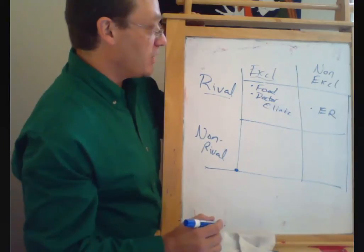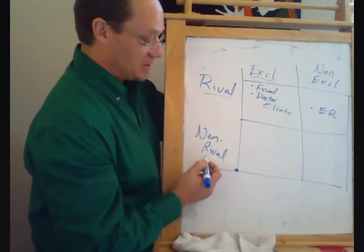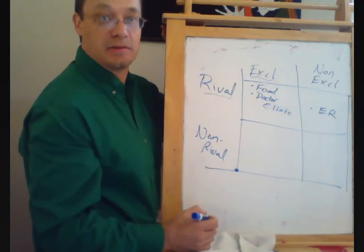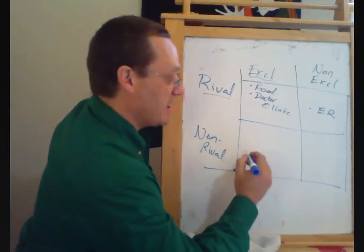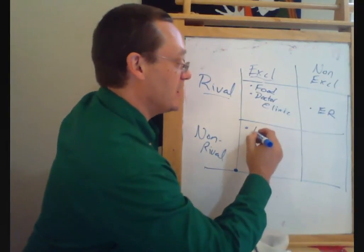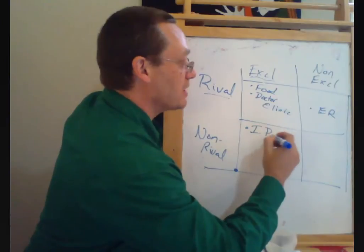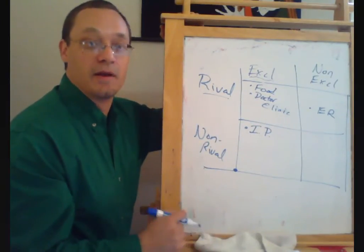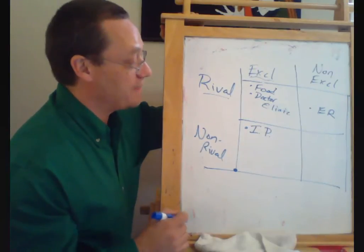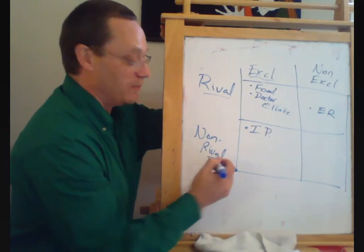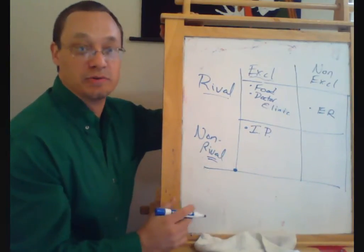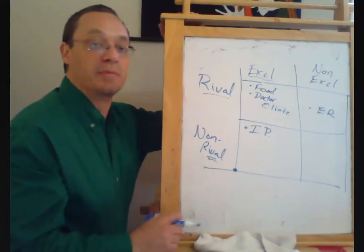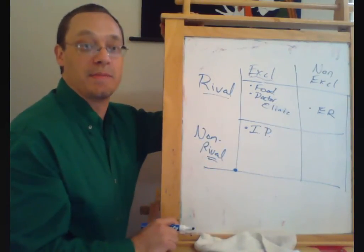We could look at something that is non-rival and excludable. And this would be a situation of many types of intellectual property intensive goods. So something like a movie or a song would be non-rival because the marginal cost per user is basically zero, but excludable because people have intellectual property rights.